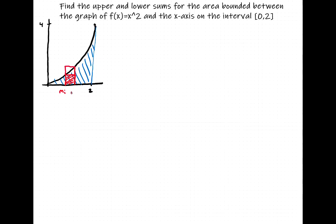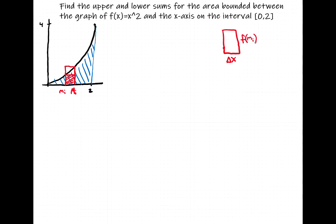So we need an expression for upper sums. Remember, there are going to be two types of rectangles. The lower sums will have a base of Δx and a height of f of lowercase m sub i — that's for the left endpoints. And there's also the other rectangles where the base is Δx and the height is f of capital M sub i, where we're using the right endpoints.